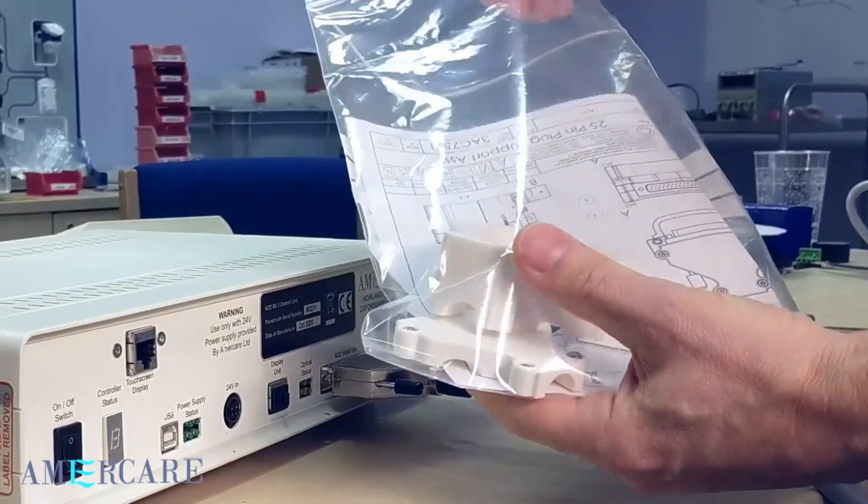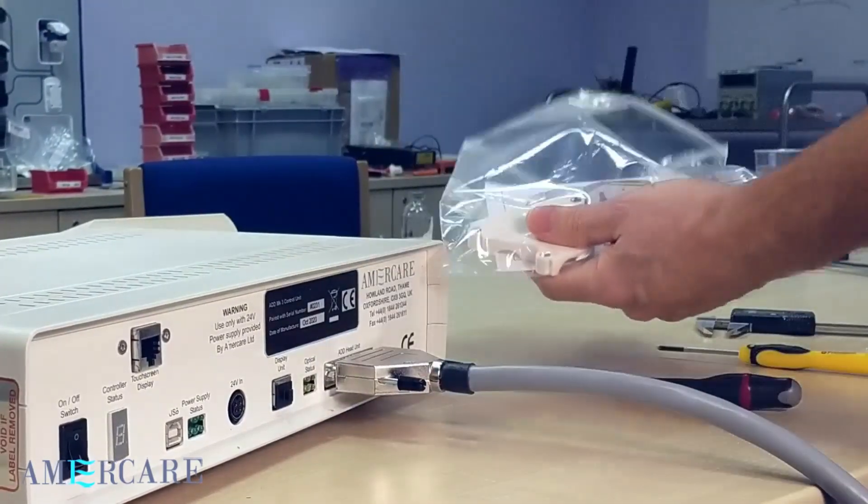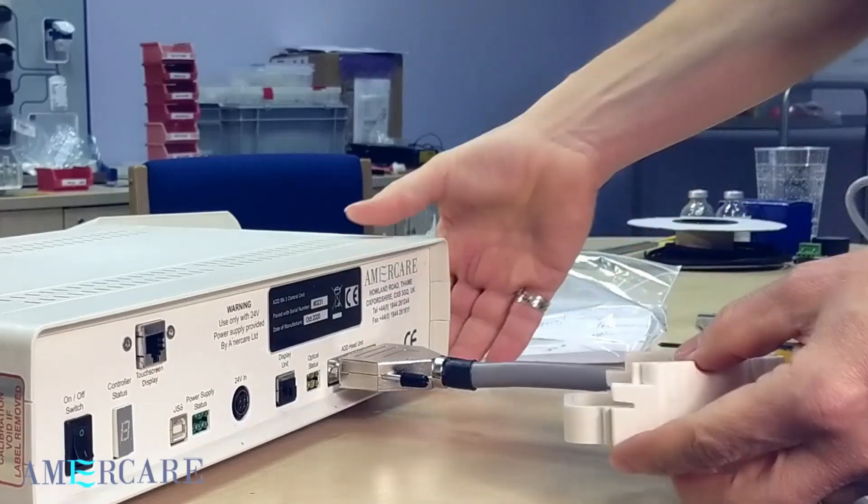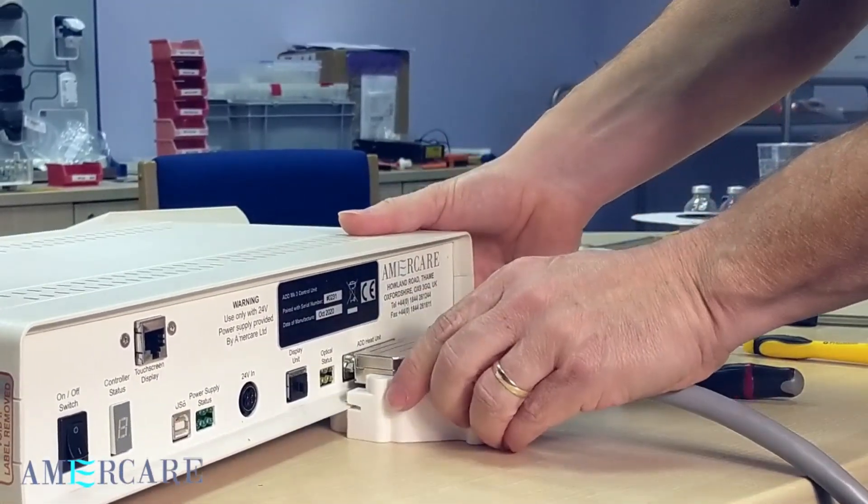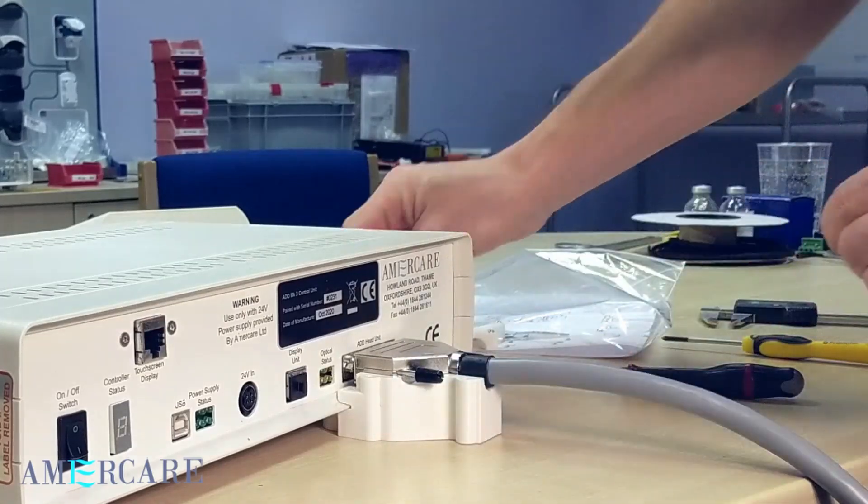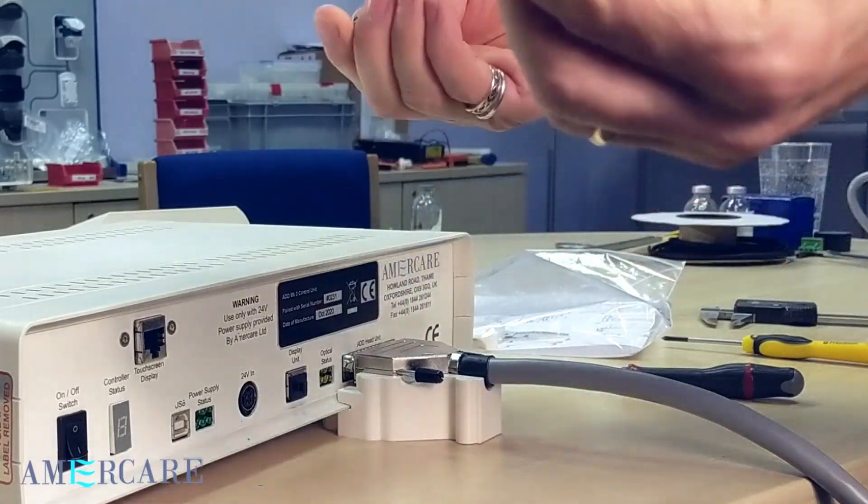We also supply this additional support assembly. Simply take this section, lift the control box up and sit it under the D connector. This slides forwards and is then secured by using the two supplied M3 screws.